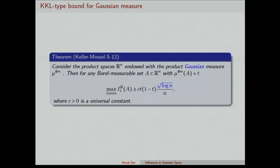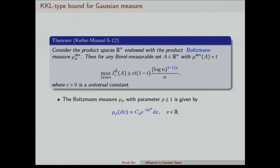Now, in our paper, the main theorem is: we can prove a version of the KKL bound for these geometric influences for the Gaussian measure. When the underlying measure is the product Gaussian, we can prove exactly the same type of statement as in the KKL theorem, but instead of log n we have square root of log n. The proof also works not only for the Gaussian measure but for a family of measures generalizing Gaussian — the Boltzmann measure — where the density is proportional to e^{-|x|^ρ}.